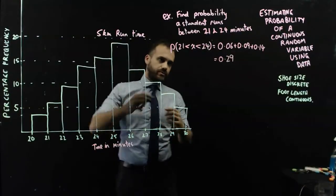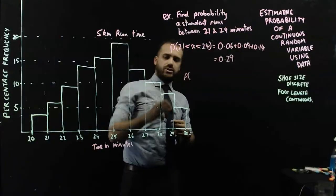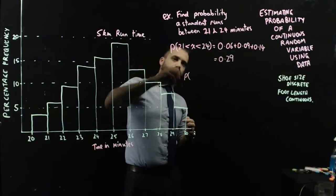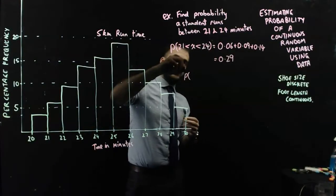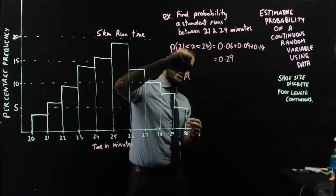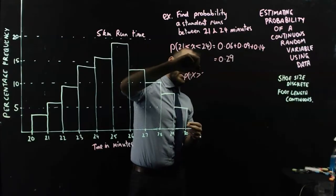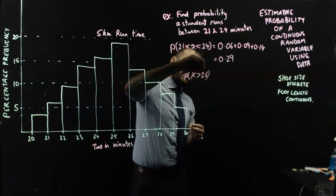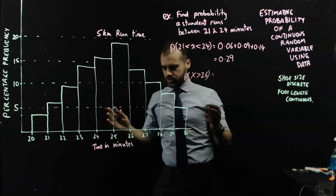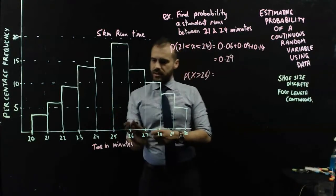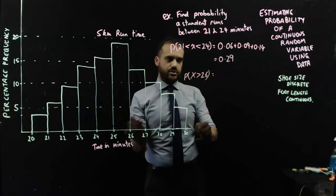Now, that's sort of fairly straightforward now. We can do a couple of extra ones. The probability that a student runs greater than, that x is greater than 26. Okay, so greater than 26. Here's 26, greater than 26.